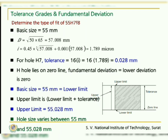As the H hole lies on the zero line, the fundamental deviation is the lower deviation and its value is 0. So the basic size of 55 mm is the lower limit. The upper limit is calculated by adding the lower limit and tolerance, giving an upper limit of 55 + 0.028 = 55.028 mm. So the hole size varies between 55 mm and 55.028 mm.